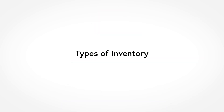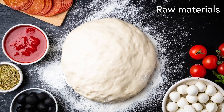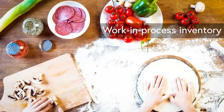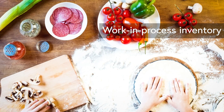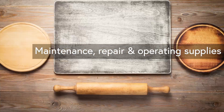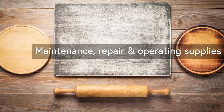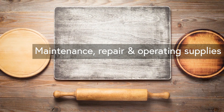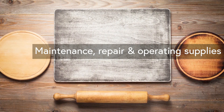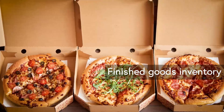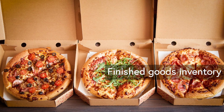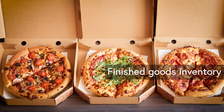Firms hold different types of inventory. Raw materials, which are purchased but not used. Work in process inventory, which are materials and parts being worked on. Maintenance, repair and operating supplies, which is all you need to have but don't go into the product, such as tools, consumables and clothing. Finished goods inventory, of course, which represent completed products that are awaiting shipment, often stored in a warehouse.